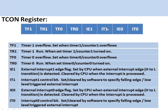The TCON register is a bit-addressable register. The first 4 bits are connected to interrupts, which will be discussed in upcoming videos. The last 4 bits are used for timer or counter control and monitoring. The TR0 bit corresponds to Timer 0 — it must be set to start the timer or counter, and the TF0 bit is set when an overflow occurs. Similarly, TR1 and TF1 correspond to Timer 1 or Counter 1.